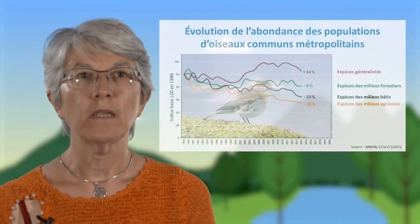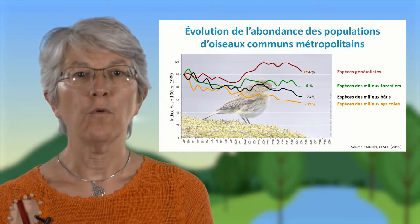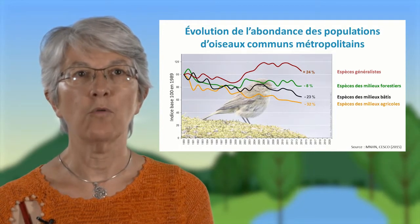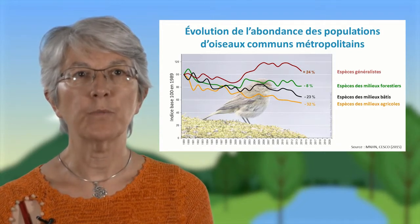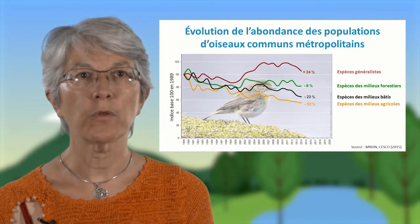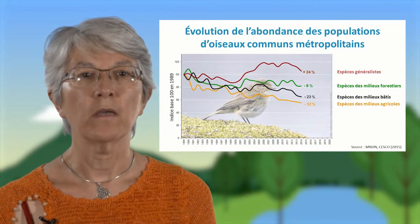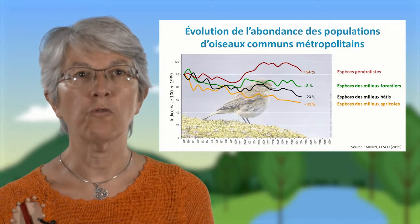Le constat du déclin de la biodiversité et de l'augmentation de la fragmentation des milieux naturels. En termes de déclin de la biodiversité, voici l'exemple des oiseaux communs, où depuis 1989, on voit sur les courbes que seules les espèces généralistes, la courbe en rouge en haut, sont en augmentation, alors que toutes les autres espèces d'oiseaux spécialistes de différents milieux sont en déclin, les espèces des milieux forestiers en vert, et de manière encore plus forte, les espèces des milieux bâtis en noir et des milieux agricoles en jaune.